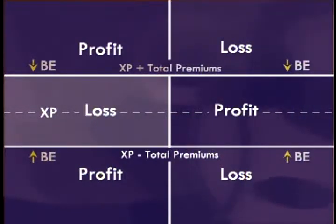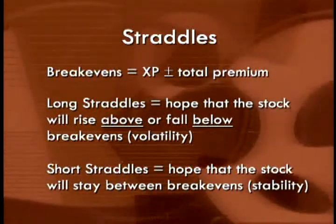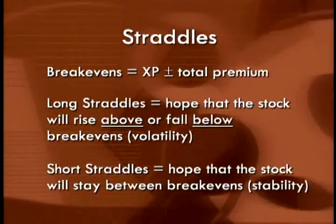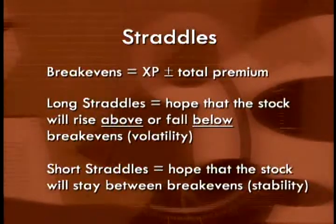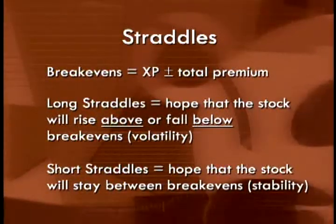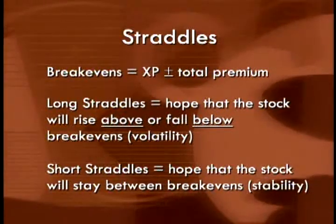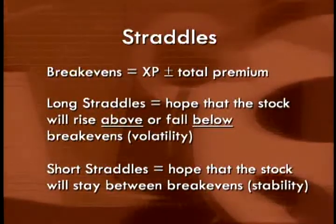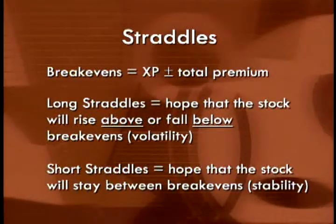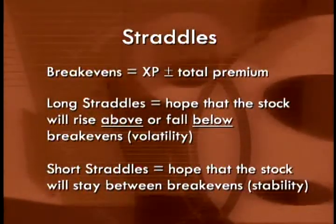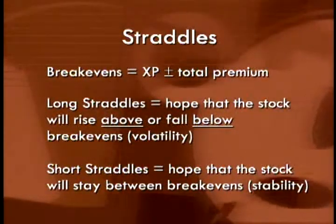To summarize straddles: the break-even points are always calculated the same way whether long or short — take the strike price and add and subtract the total premiums. You always have two break-even points. With the long straddle, you hope the stock rises above or falls below the break-even points — you're looking for volatility. With the short straddle, you hope the stock stays between the break-evens — you want stability. These two types of positions can be seen as just the opposite of each other.